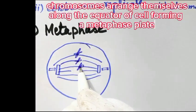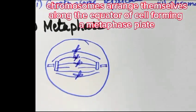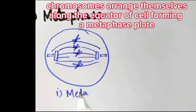Chromosomes arrange themselves along the equator of the cell, forming a metaphase plate.